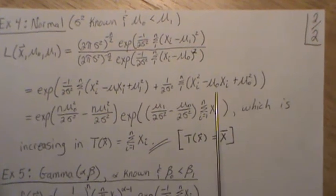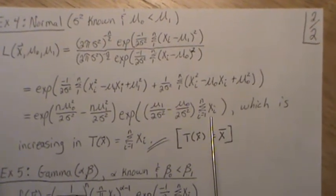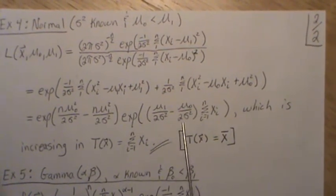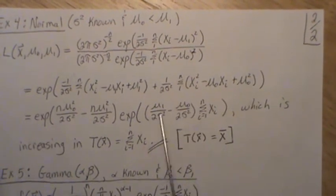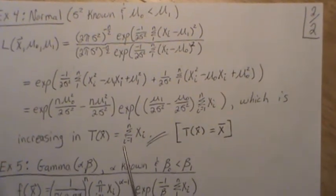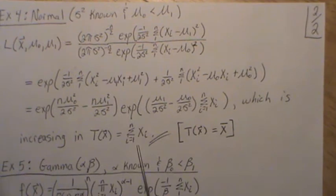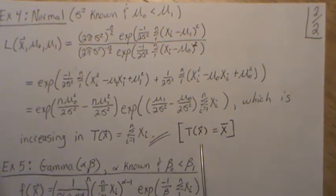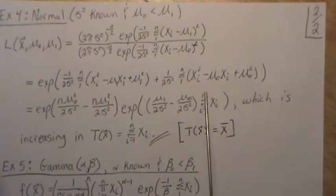And then what's left over, we can factor out of the sum of the xi. And this is positive because μ₁ is bigger than μ₀. So this is an increasing function in the statistic of the sum of the xi. Now again, a lot of people will divide by n here and multiply by n, and then the statistic becomes the mean. But either is fine.